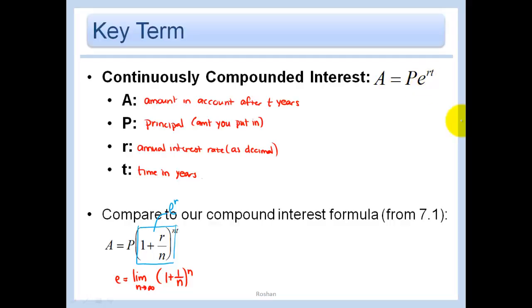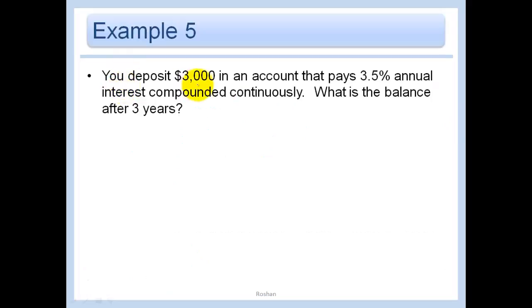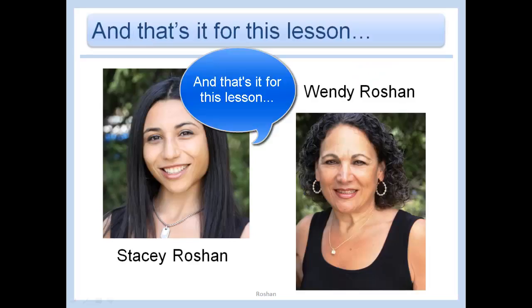You deposit $3,000 in an account that pays 3.5% annual interest compounded continuously. What is the balance after three years? We're going to use our PERT equation here. We have 3,000 is the initial amount we put in, e^(0.035 times 3). When we put this in our calculator, we should get $3,332.13. And that's it for this lesson. Bye.